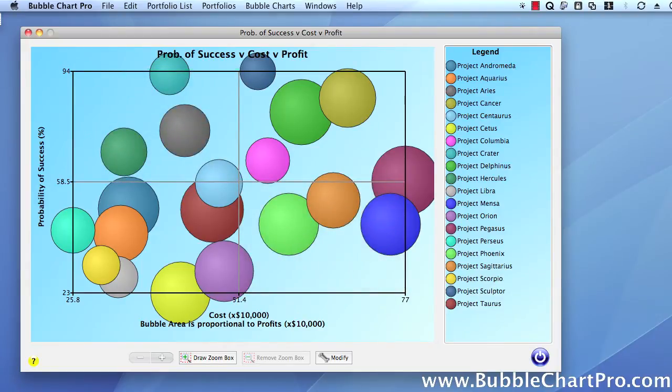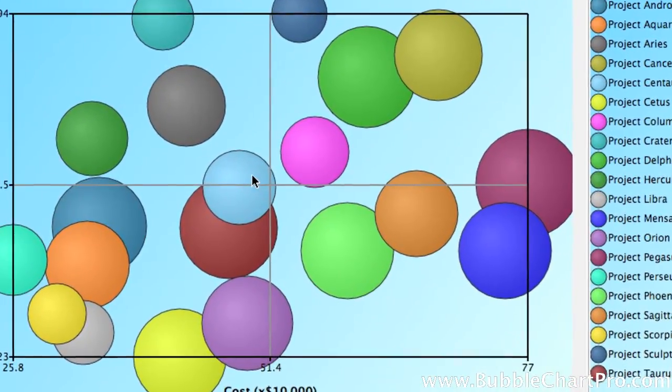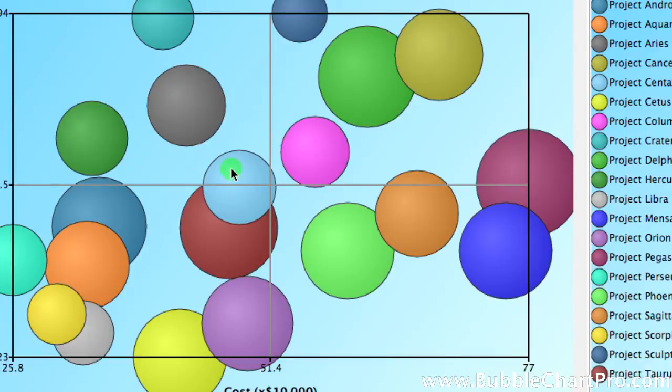If you want to drill down into the data associated with the project, it's easy to do in BubbleChart Pro. First, when you place the cursor over a bubble and right-click the mouse button, it will display the values for that bubble, showing you the x-axis, y-axis, and bubble size values.